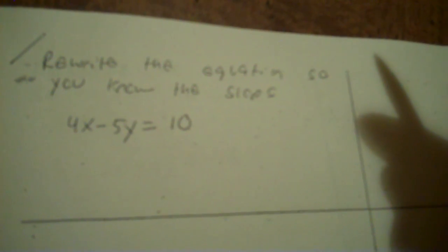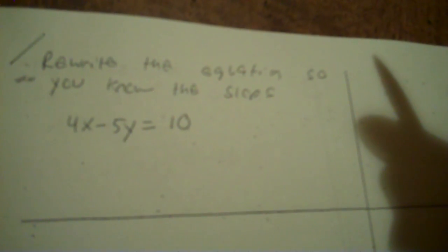Rewrite the equation so you know the slope. Here's a problem. Yesterday we were graphing with slope y-intercept. Now you make the wall, and you have to get the y by itself. The y is not by itself, so you can't do your m and b. You need to get the y by itself.